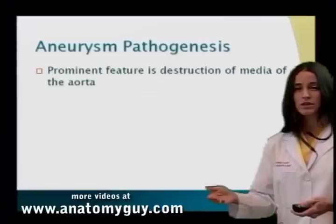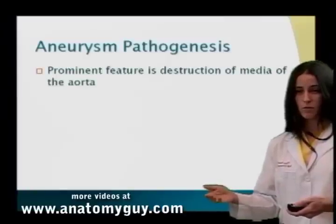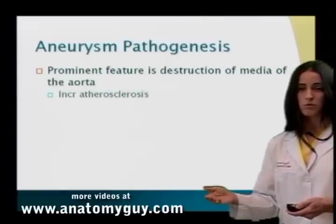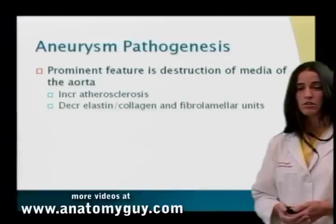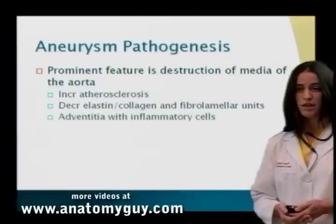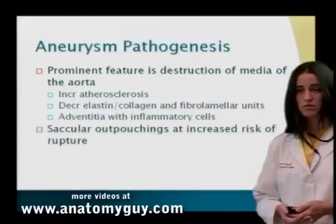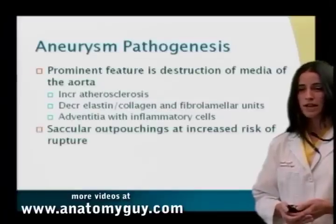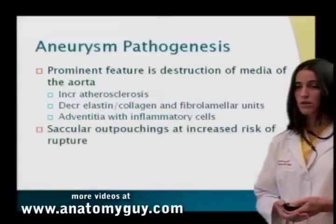Prominent histological features of a AAA include destruction of the media of the aorta. You may see increased atherosclerotic disease, decreased elastin, collagen, and fibrolamellar units. The adventitia may have inflammatory cells, and saccular outpouchings on a AAA put you at an increased risk of rupture.